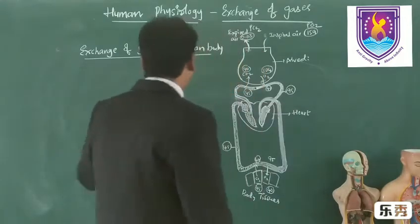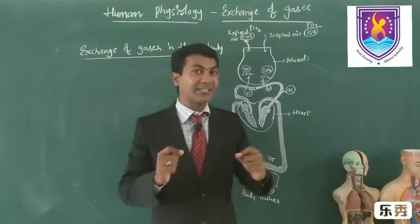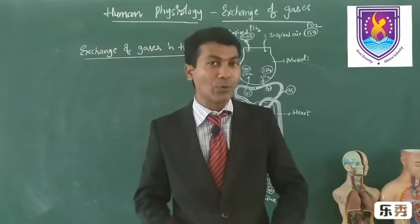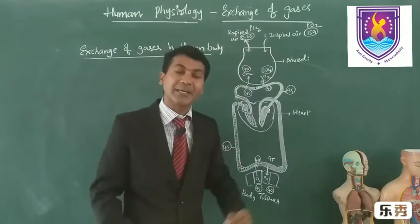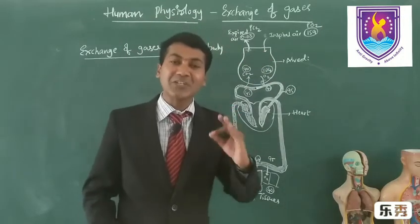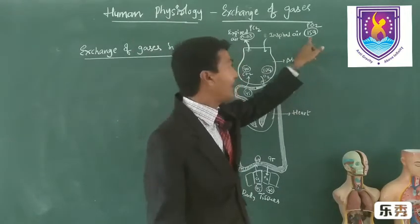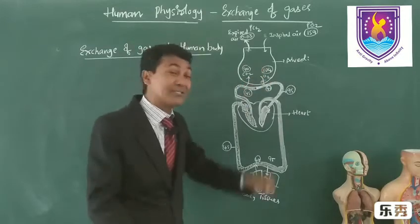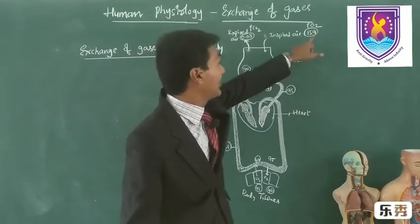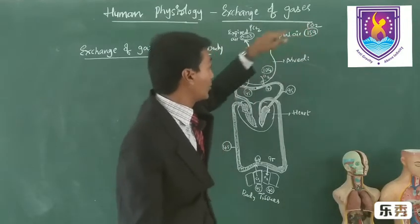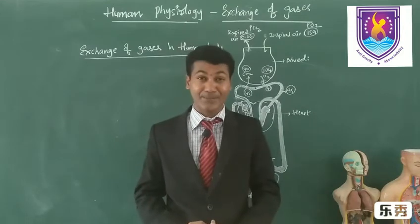Exchange of gases in the human body. Pressure gradient plays a vital role. Oxygen present in the atmosphere has a partial pressure of 159 mmHg, whereas the oxygen present in the alveolus is only 104 mmHg. Obviously, oxygen has to move from higher to lower, so oxygen reaches the lungs — the alveolus — first.